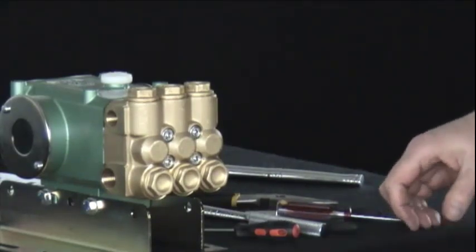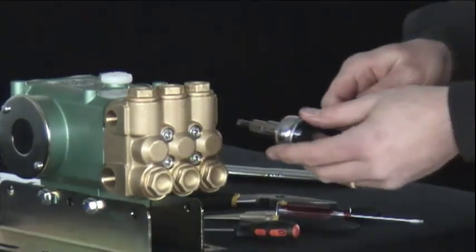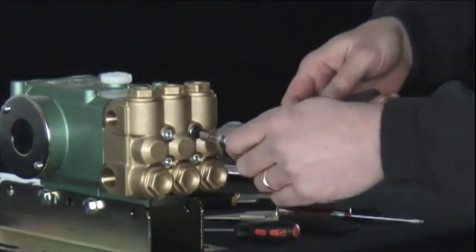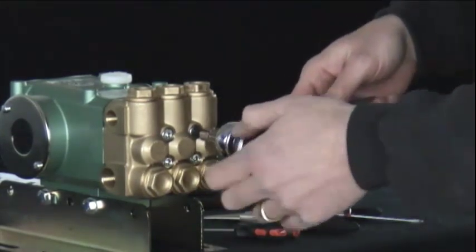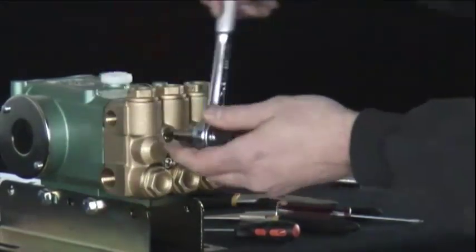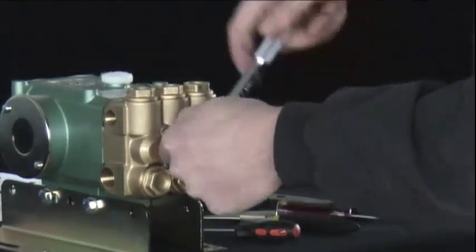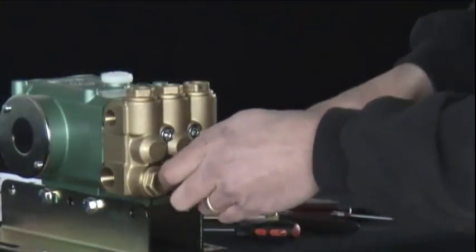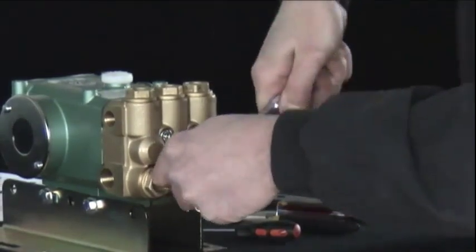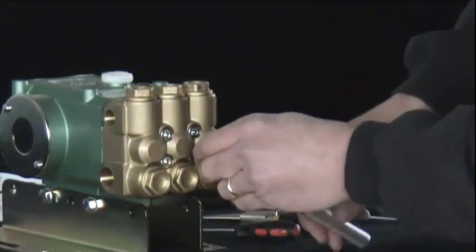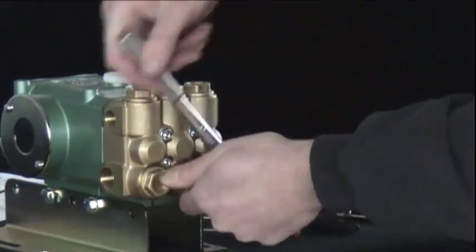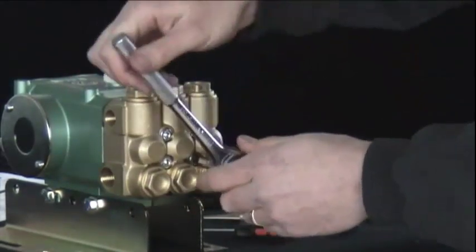Next, for the seals, begin by removing the four center allen head bolts. For the purpose of this video, these four bolts were previously loosened.